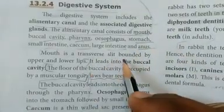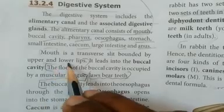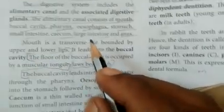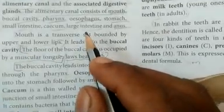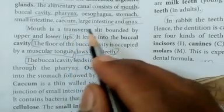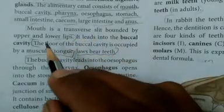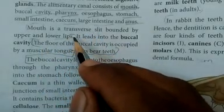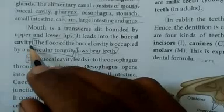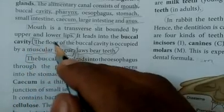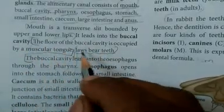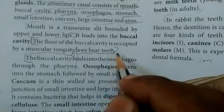The mouth is a transverse slit bounded by upper and lower lips. It leads to the buccal cavity. The floor of the buccal cavity is occupied by a muscular tongue, and the jaws bear teeth.